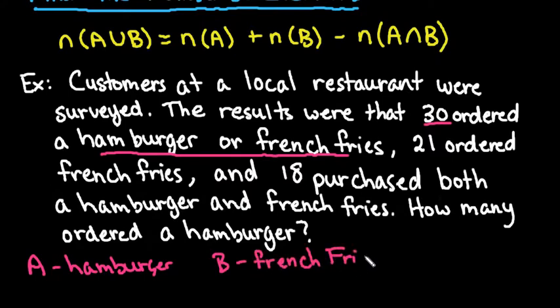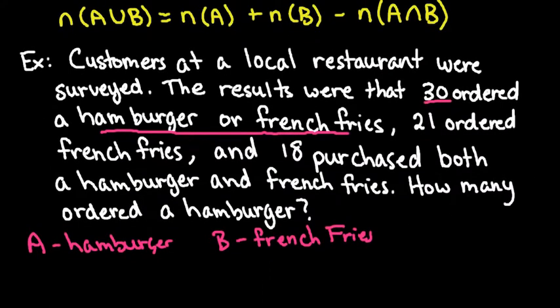So I'm just going to start writing down the important information as we find it in the problem. There's many ways that you could do this, but I'm going to establish that the number in A or B is equal to 30. Okay, so then if we continue reading, let's find out what other information we can find in here.